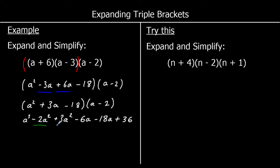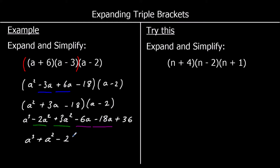So we've got two a squared terms and two a terms to simplify. We've got a cubed. Negative 2a squared plus 3a squared — negative 2 plus 3 is 1, so we've got a squared. Negative 6a take away another 18a gives negative 24a. And plus 36 on the end. And that is our answer.